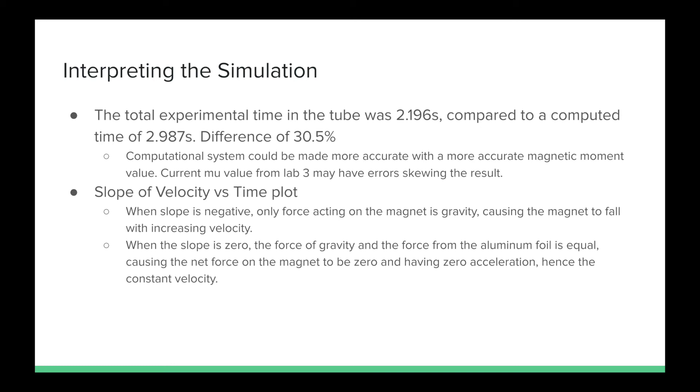In order to analyze the slopes of the velocity versus time plot, where the slope is negative, the only force acting on the magnet is gravity, which causes the magnet to fall with increasing velocity. When the slope is zero, the force of gravity and magnetic force from the aluminum foil is equal, causing the net force on the magnet to be zero, and having zero acceleration, hence the constant velocity.